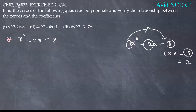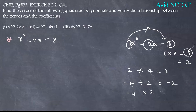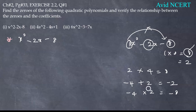Starting with the multiples of 8: 2 times 4 is 8. Since we need minus 8, either 2 or 4 can be negative. We need minus 2, which we get from minus 4 plus 2, which equals minus 2. And minus 4 times plus 2 is minus 8. This satisfies both conditions for minus 8 and minus 2. So instead of minus 2x, we write minus 4x plus 2x.